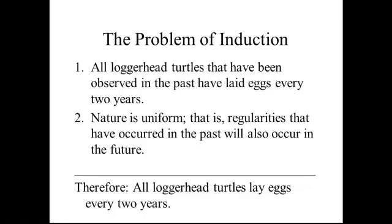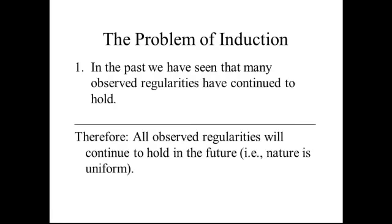Full-blown empiricists think that their experience must provide the reason that the principle of the uniformity of nature is true. So they'll probably use the following argument: In the past, we have seen that many observed regularities have continued to hold. Therefore, all observed regularities will continue to hold in the future, for example, nature is uniform.